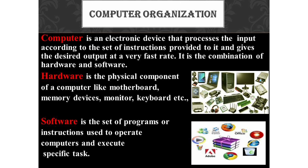What do you mean by hardware? Hardware is the physical component of a computer. Examples include motherboard, memory devices, monitor, and keyboard. What about software? Software is a set of programs or instructions used to operate computers and execute specific tasks. By using these instructions or programs, you can make use of the hardware or the applications. Some examples of software are Mozilla Firefox, Windows Media Player, Adobe Photoshop, Google Chrome, Recycle Bin, Internet Explorer, and Microsoft Office.